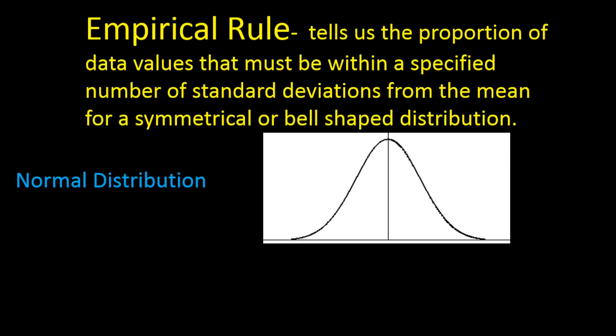An important characteristic of the normal distribution is that the mean is equal to the median and the mode — they are always equal to each other. The mean is the arithmetic average, the median is the mark where 50% of values are below and 50% above, and the mode is the most frequently observed value. For a normal distribution, this will always be in the center. On the z-scale, the mean is always standardized to zero when using z-scores.